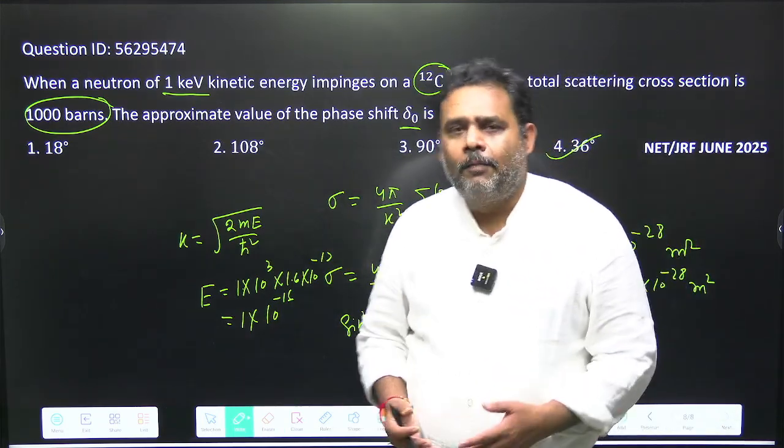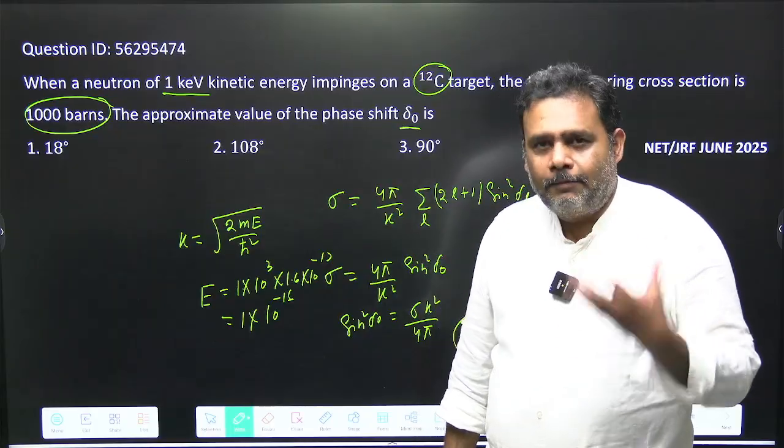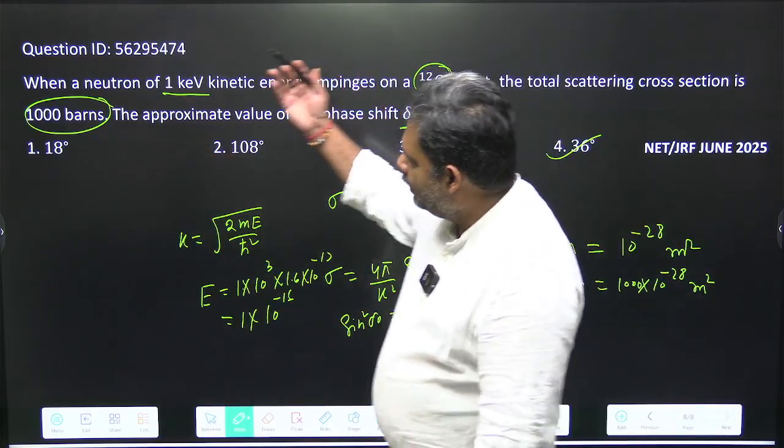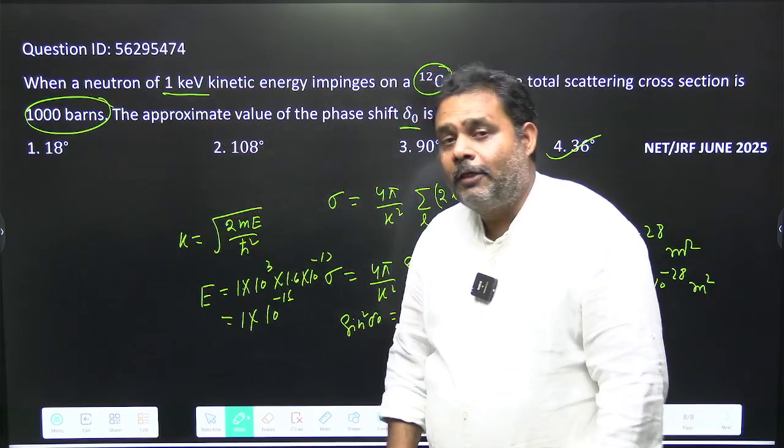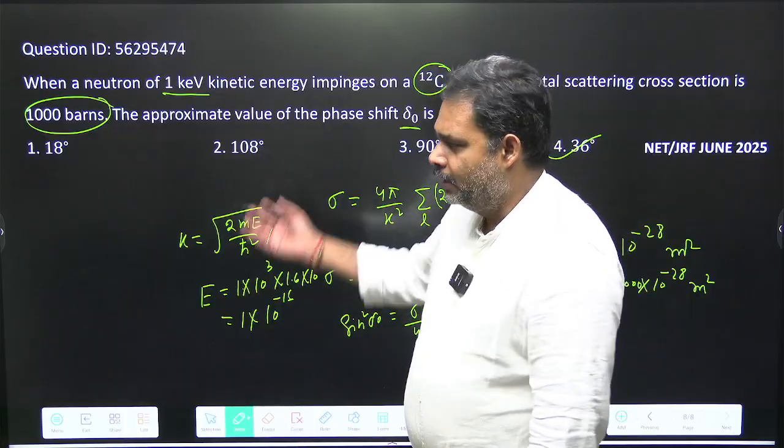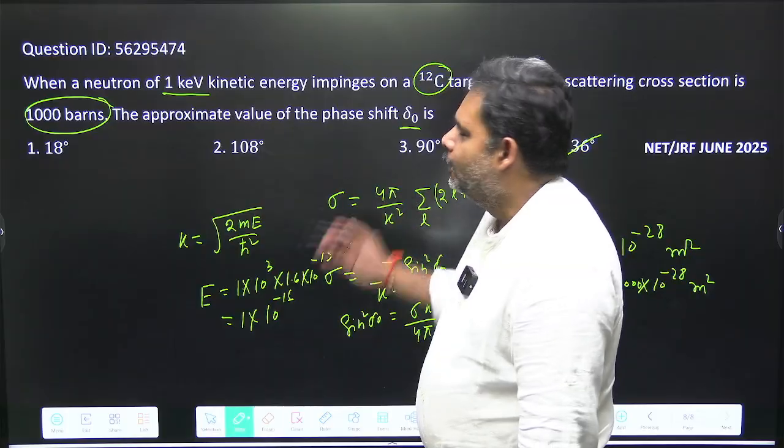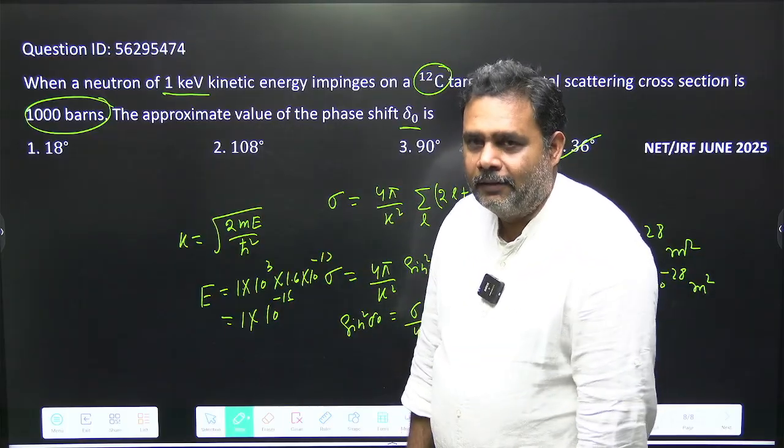This is just a formula-based question, but yes you have to have knowledge of what is the meaning of barn, how you can convert 1 kiloelectron volt into joules, and that is it. This is a typical question based on the basic formula of scattering. Thank you.